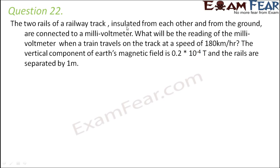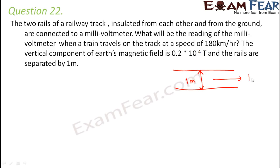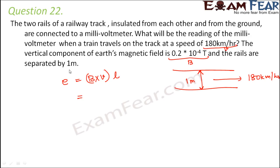Question number 22: The two rails of a railway track, insulated from each other and from the ground, are connected to a millivoltmeter. What is the reading when a train travels at 180 km/h? The distance between the tracks is 1 meter. This is again a case of motional EMF: EMF = B × v × l, with θ = 90° so sine θ = 1.